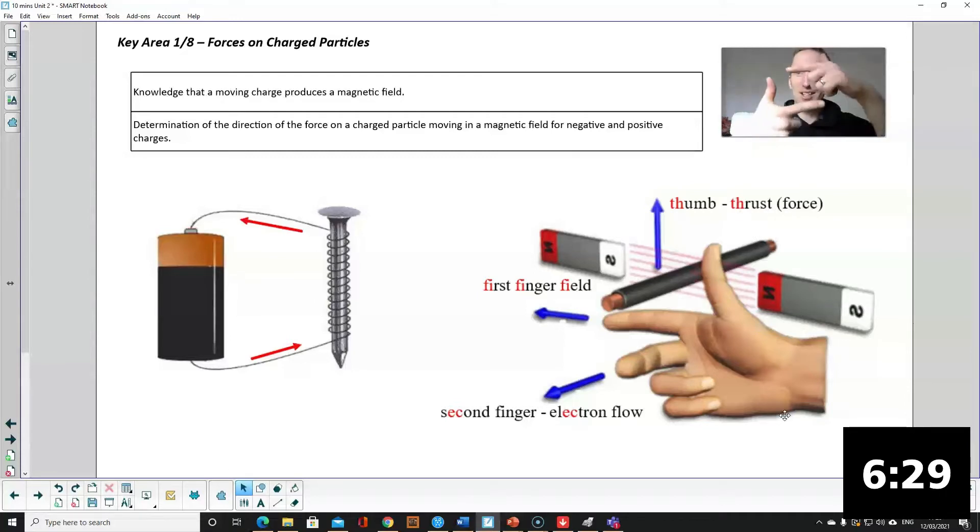Where your thumb is the direction of the force, your first finger is the direction of the magnetic field from north to south, and your second finger is the direction of the current. Now I like to use my left or right hand.